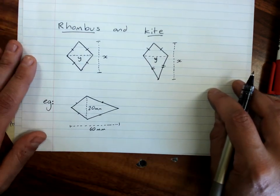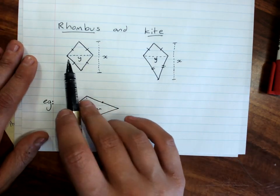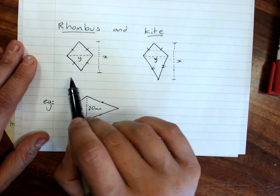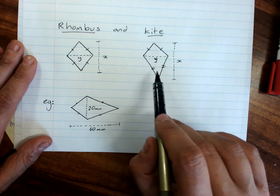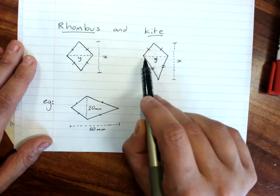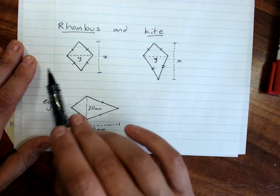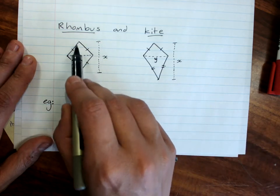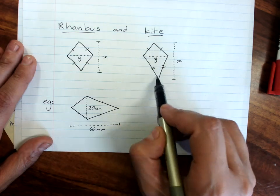The next two are a rhombus and a kite. A rhombus has all its sides the same, but it's like a squashed square. A kite has two short sides and two longer sides. Now for both of these, the dimensions that are at right angles are actually across the center of the shape.